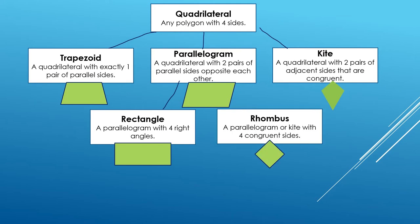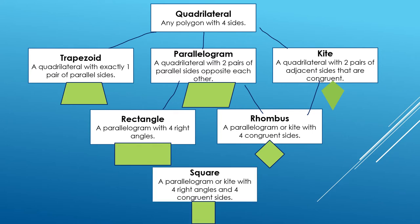And we can even go further with a rhombus. A rhombus is a parallelogram or a kite with four congruent sides. So it could be either. Specifically, a rhombus can be a special parallelogram or a special kite. And then finally, we have the square. A square is a parallelogram or kite with four right angles and four congruent sides. It's like a special rectangle or a special rhombus.